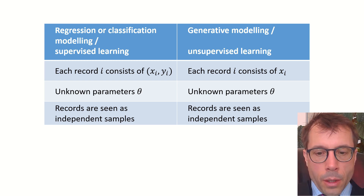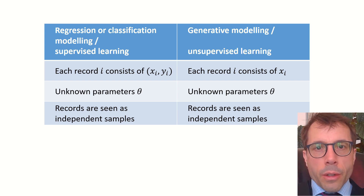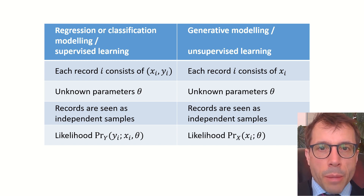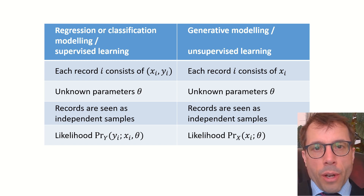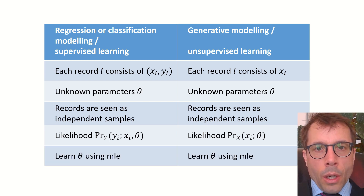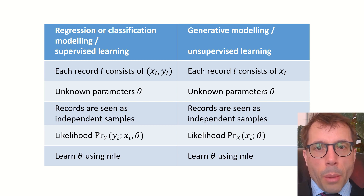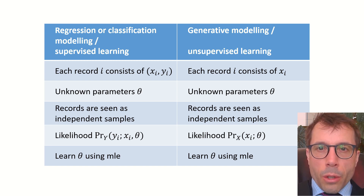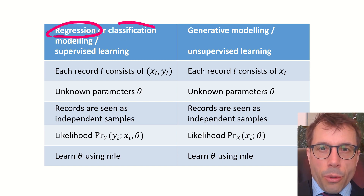Then we write down the likelihood for our probability model. For supervised learning, we have the likelihood for the label y parametrized by theta and the predictors, and in generative modelling we just have the likelihood for an observation x. The training idea is exactly the same in both cases: we use maximum likelihood estimation to fit theta.